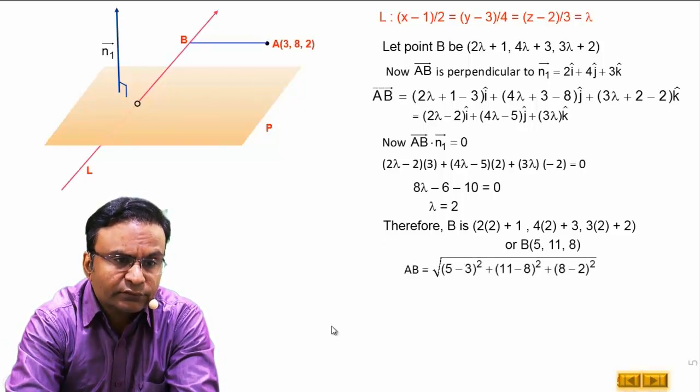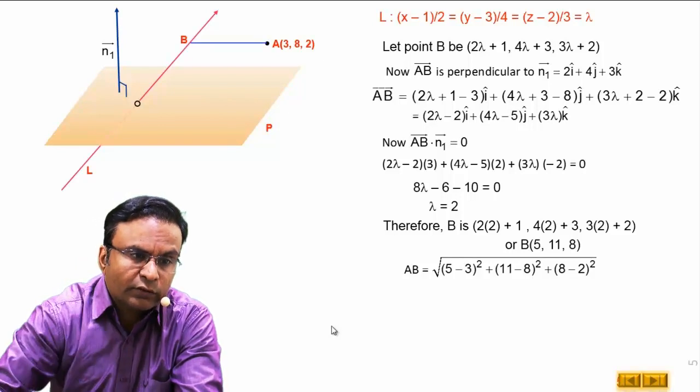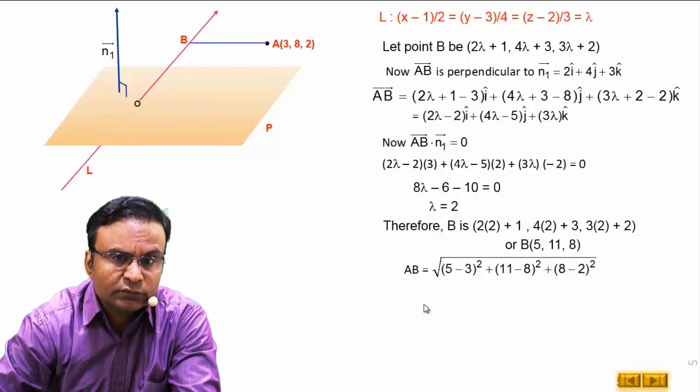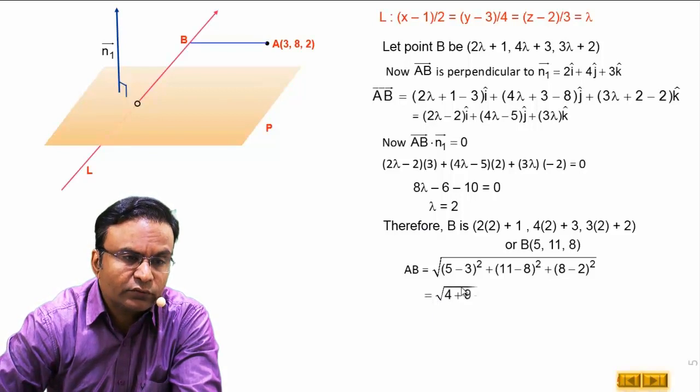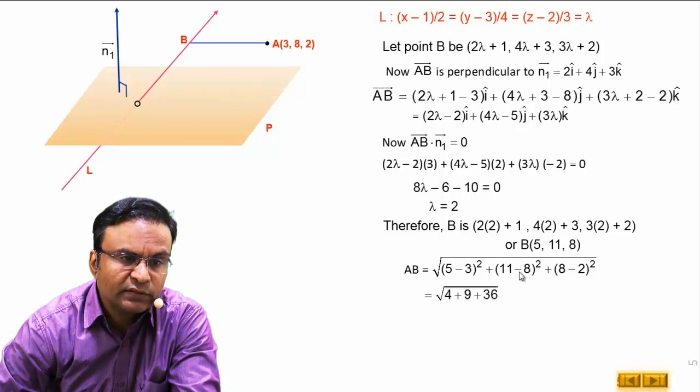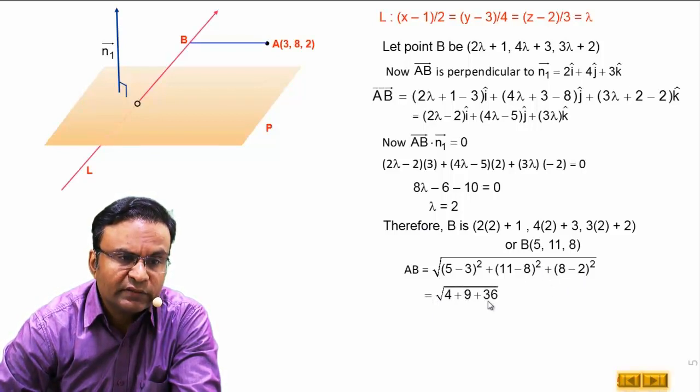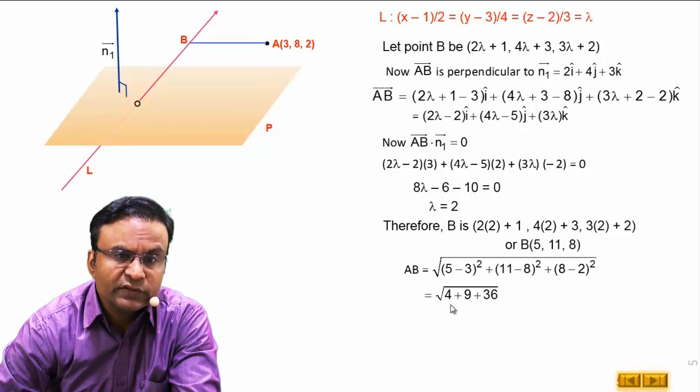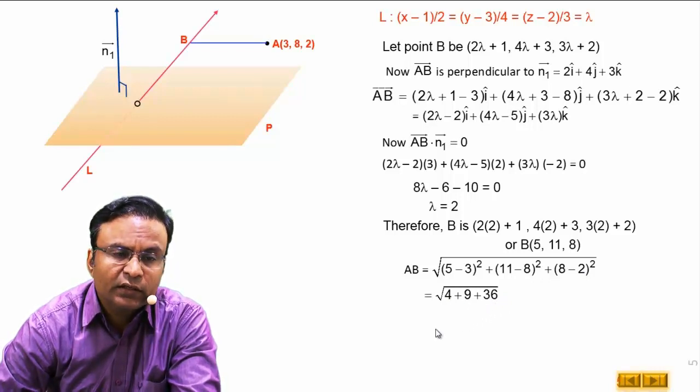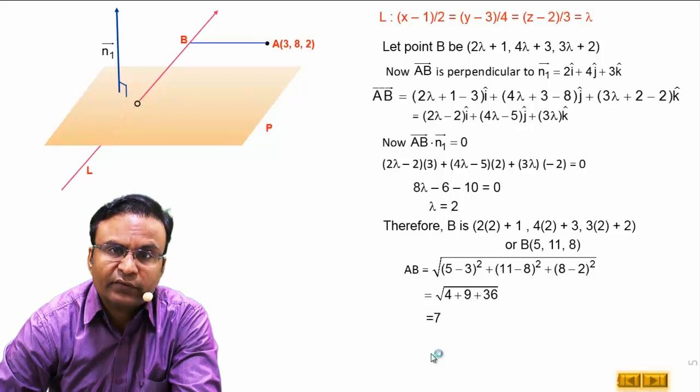AB is equal to this using distance formula. AB is equal to square root of 4 plus 9 plus 36. This sum is 49. AB distance is equal to 7.